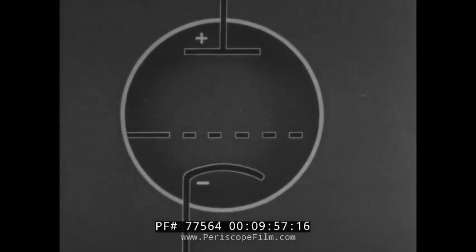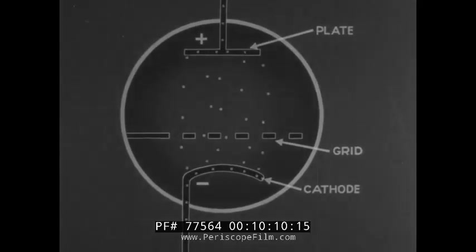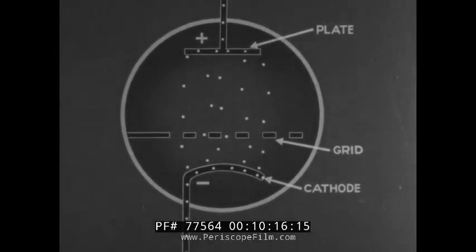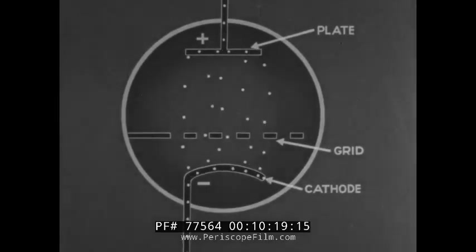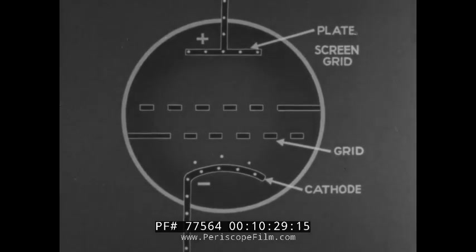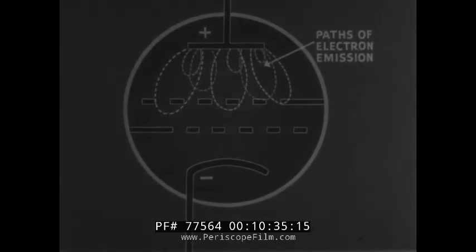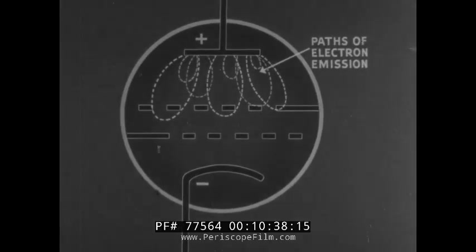The simple triode tube contains but three elements: plate, grid, and cathode. The principal electron flow in the tube is from cathode to plate. Electrons reaching the plate at high velocity strike other electrons, knocking them off the plate — this is known as secondary emission. The introduction of the screen grid adds another positive element in the tube which may attract electrons. Pads of secondary emission electrons cut across the screen grid, causing an undesirable plate-to-screen current.